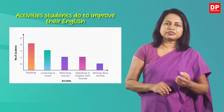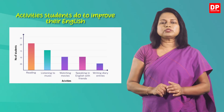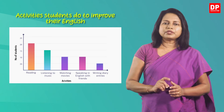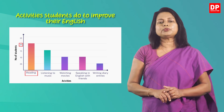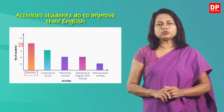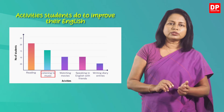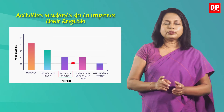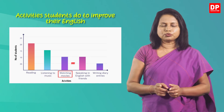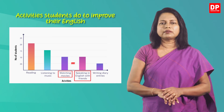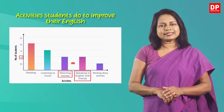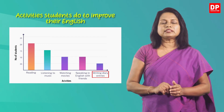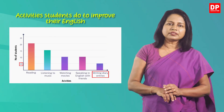As you can see, out of the given activities, most of the students engage in reading to improve their English. The number of students who like reading is 20. The number of students who like listening to music is more than the number of students who like watching movies. An equal number of students like watching movies and speaking in English with friends. This number is 10. The least number of students like writing diary entries. Only 5 students like it.